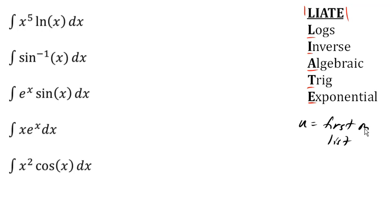So let's see how that works. So in our first example here, we have x to the fifth ln x. So x to the fifth is algebraic in nature, whereas ln x is logarithmic nature. And so for u, we're gonna pick the logarithmic expression. We're gonna pick the natural log.